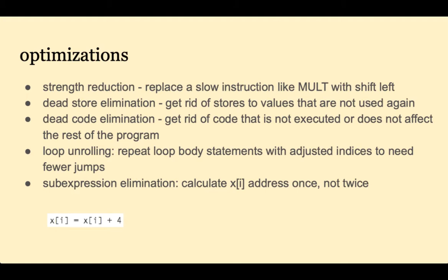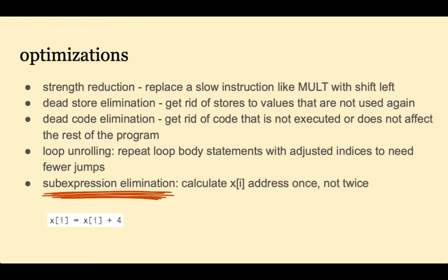A really important optimization is loop unrolling. This takes the body of the loop and duplicates it, adjusting the indices as needed, resulting in fewer jumps and branches. Another optimization is sub-expression elimination — for example, x sub i equals x sub i plus 4 can be rewritten so that the address x sub i only needs to be calculated once.